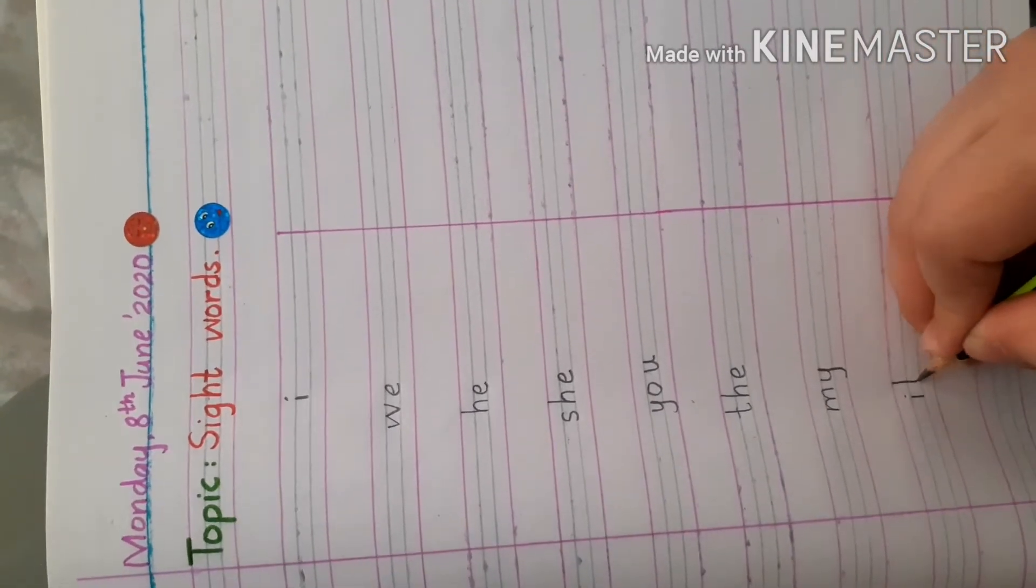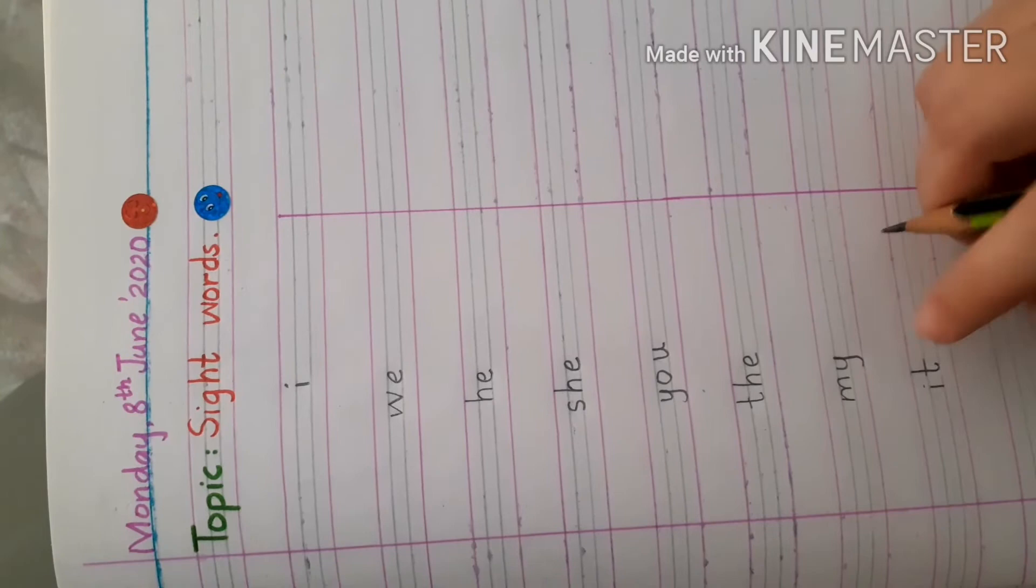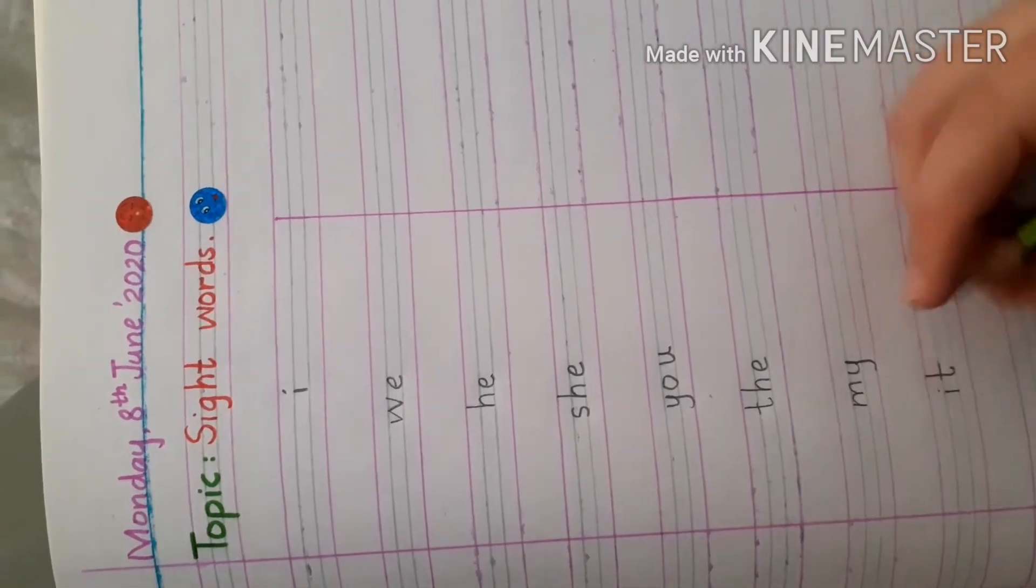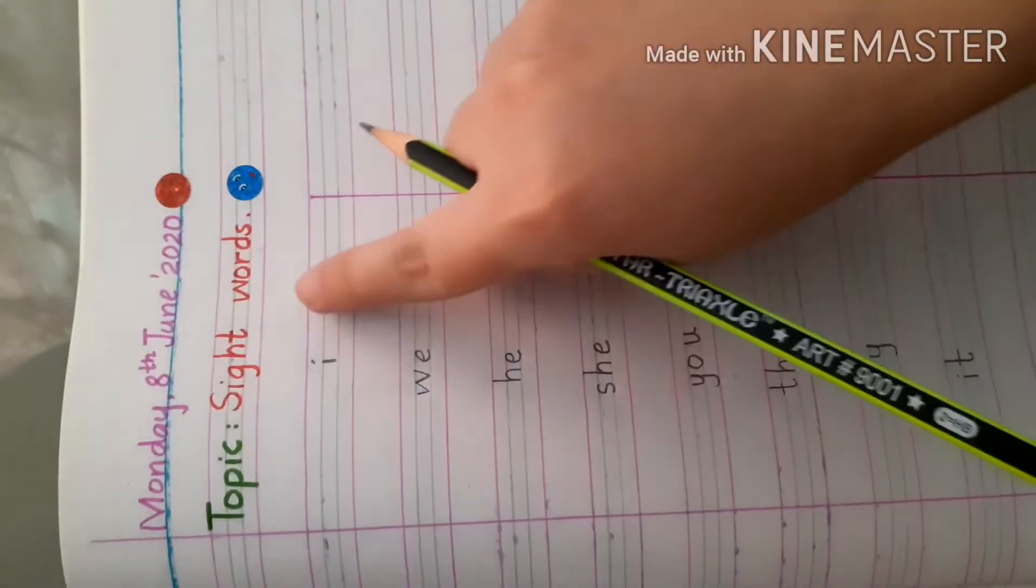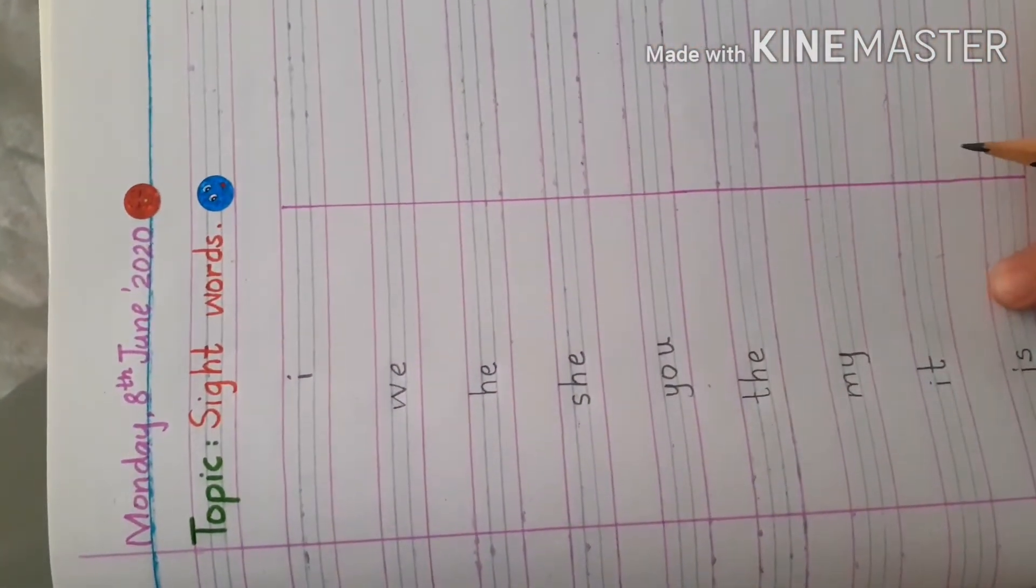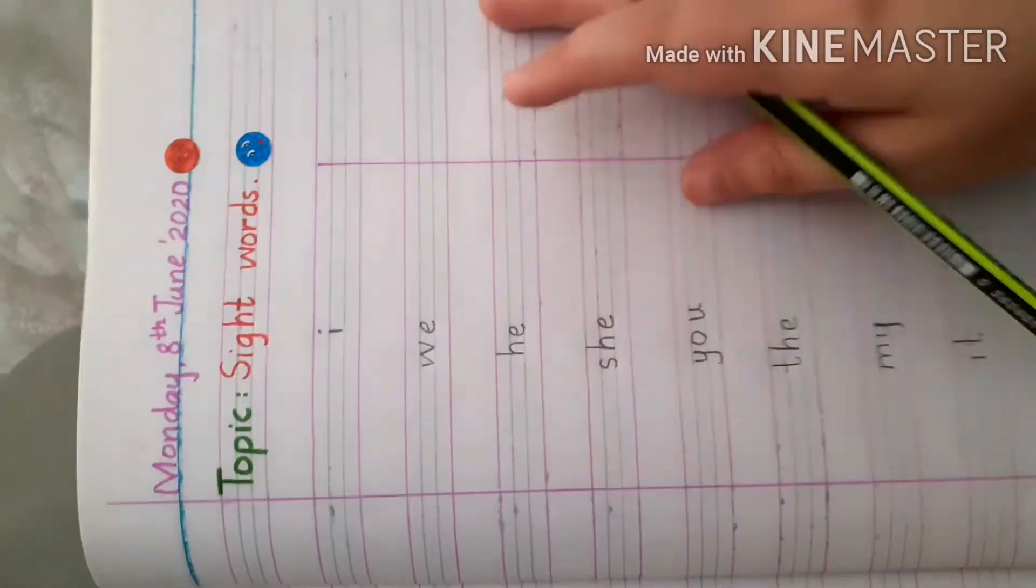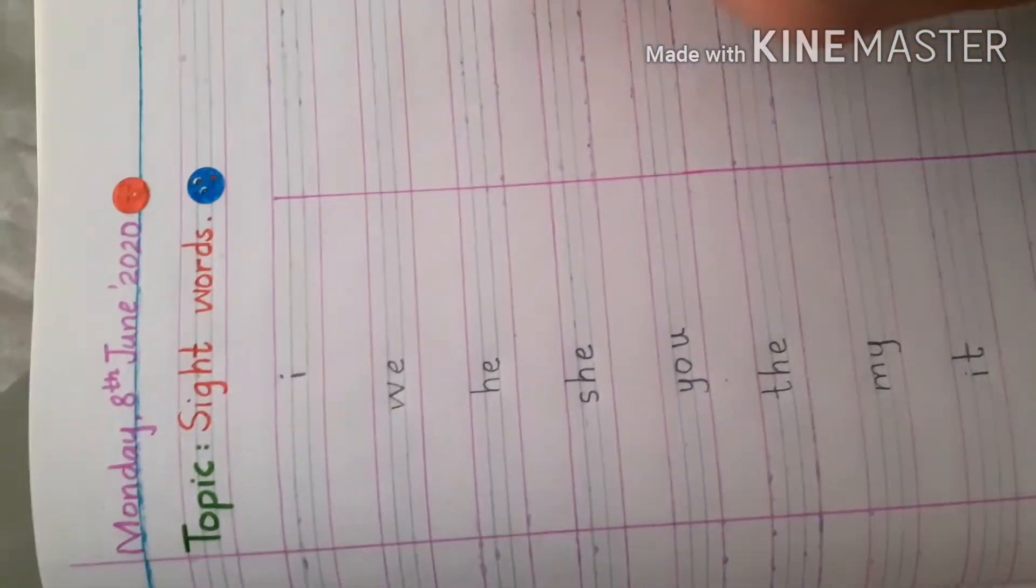M-Y, my. I-T, it. I-S, is. One thing, I have to write these words again here for your practicing, so let's start.